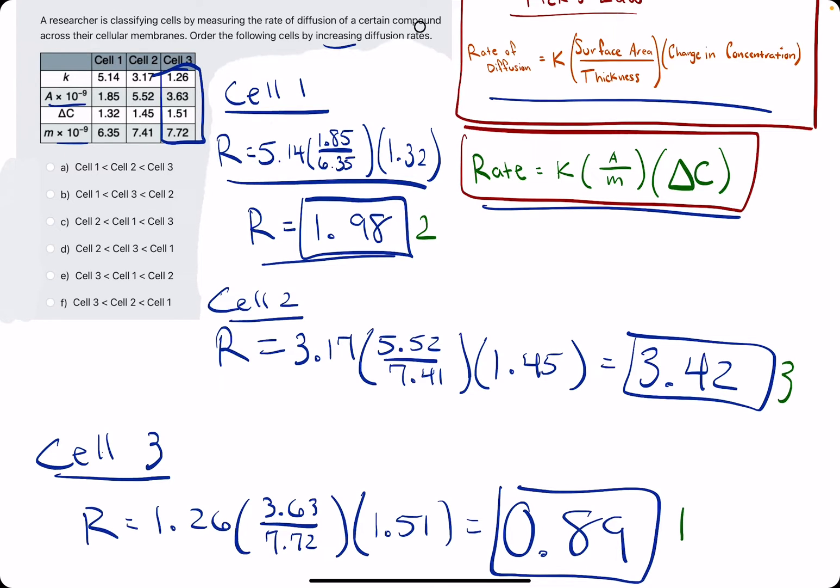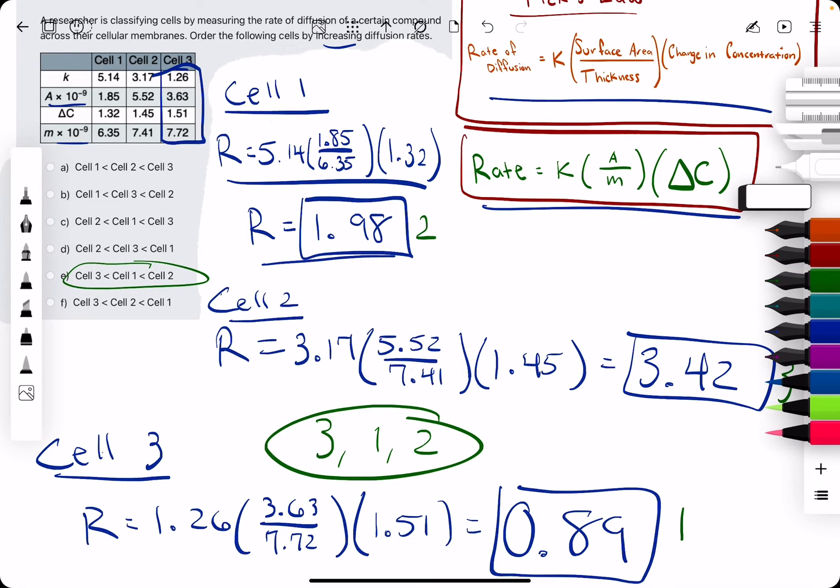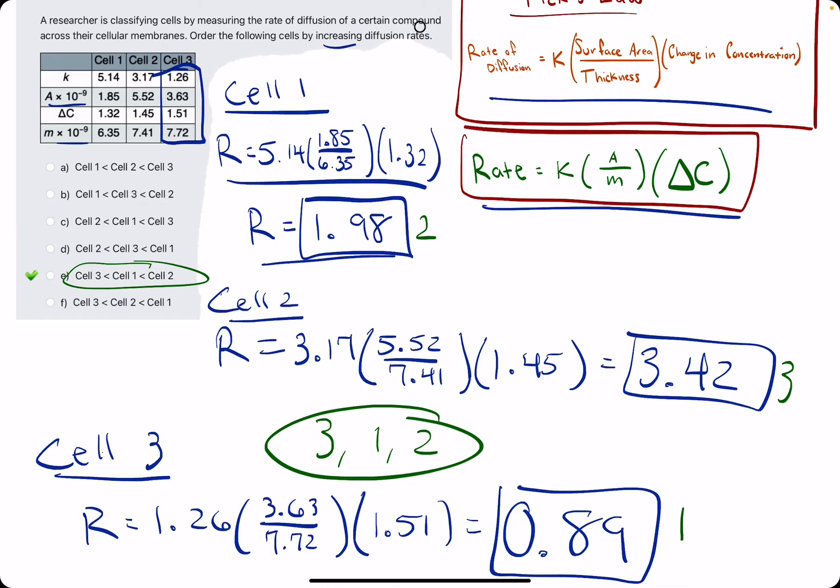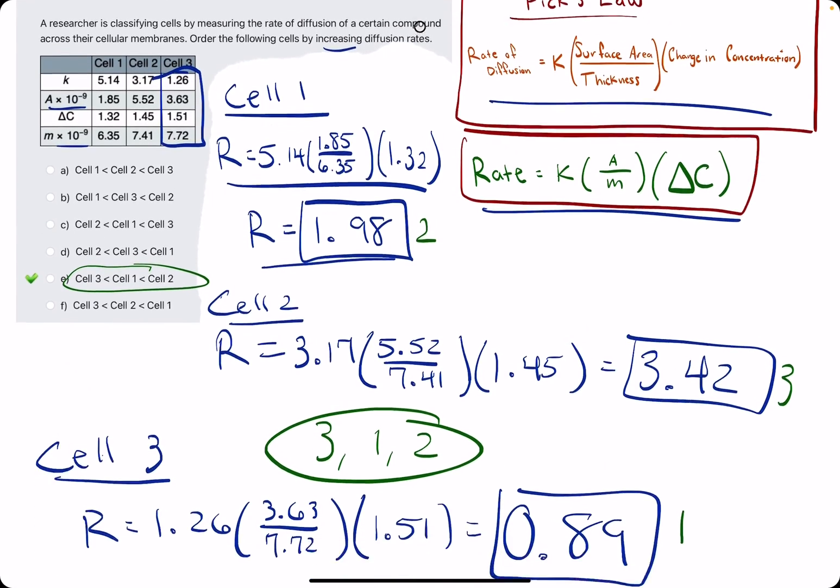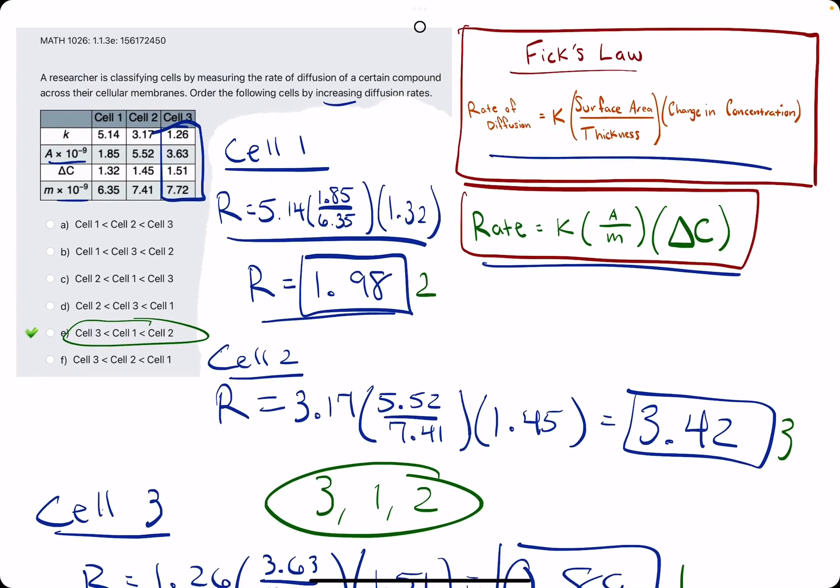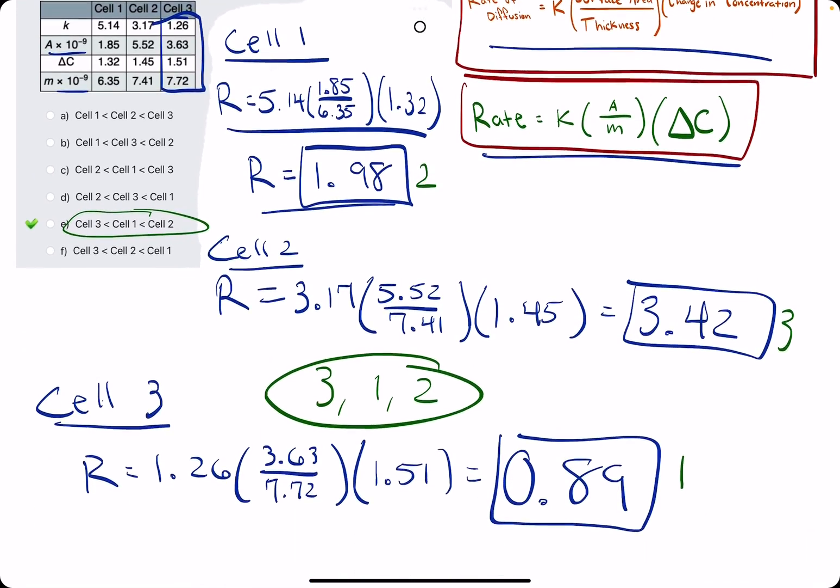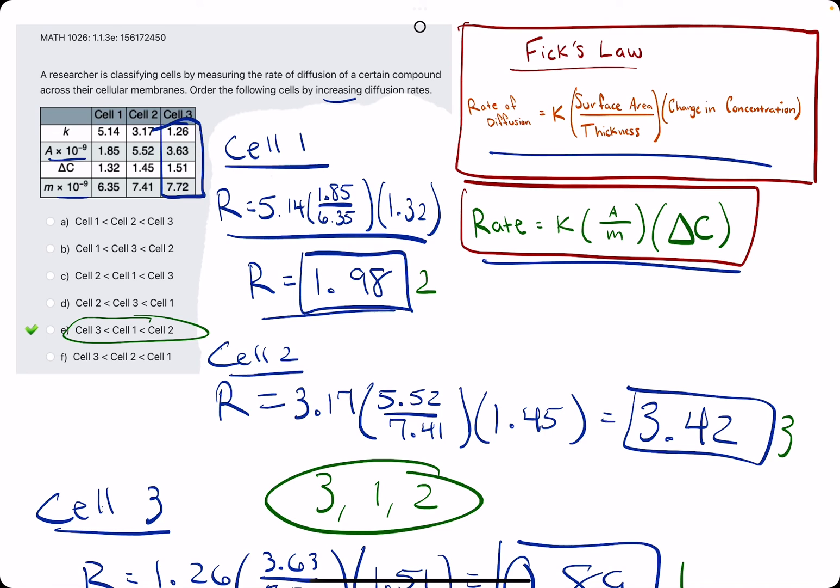All right, so from smallest to greatest we have the rates. It looks like Cell 3, 1, and 2 should be the order, so 3, 1, and 2 is option E. Let's break out the eraser to see that E is in fact our answer. I hope this makes some sense. If you'd like to see another example worked out, please visit the second example video.